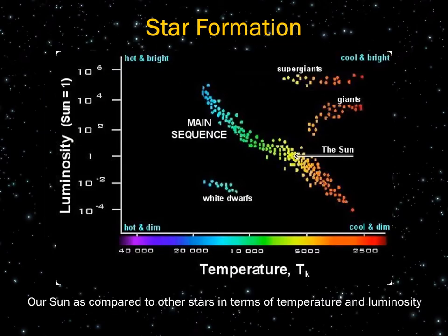This diagram shows our sun compared to other stars in terms of color, temperature, and luminosity, or brightness. Small stars, known as dwarfs, burn brightly, usually in blue or white, and are hot. Larger stars, known as giants, are dimmer, usually in orange or red, and are cool.